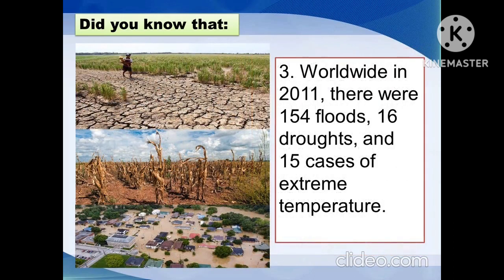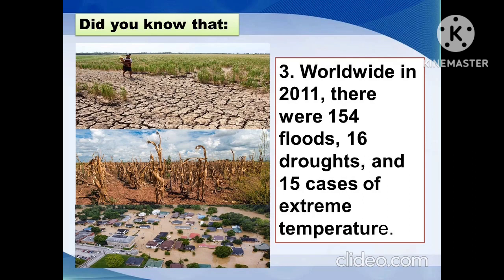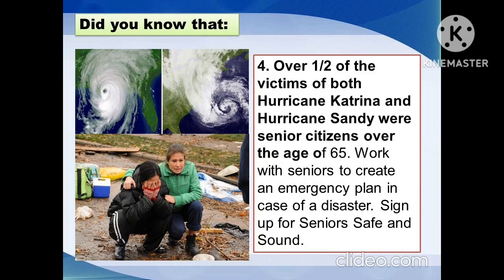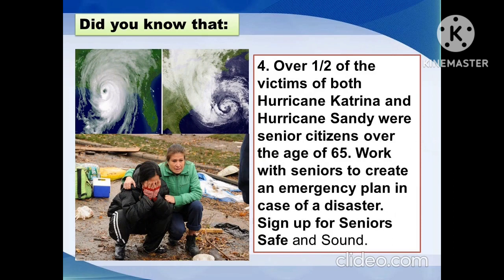Worldwide in 2011, there were 154 floods, 16 droughts, and 15 cases of extreme temperature. Over one-half of the victims of both Hurricane Katrina and Hurricane Sandy were senior citizens over the age of 65.